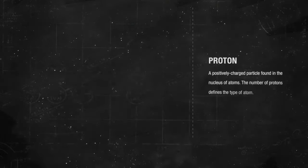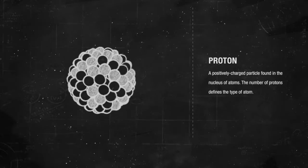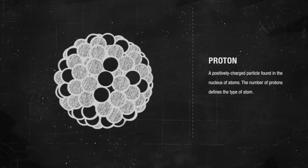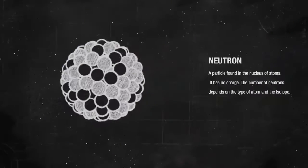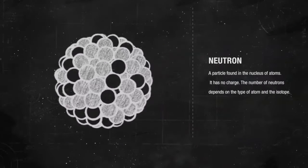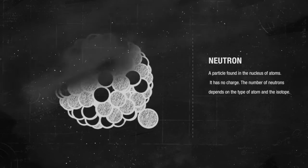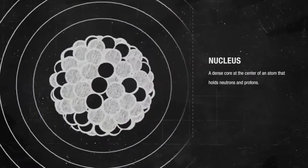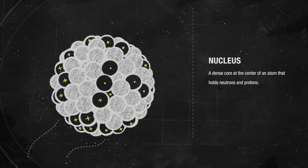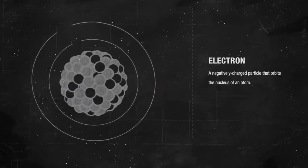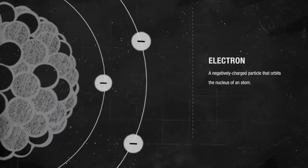You probably know the different subatomic particles of atoms: protons, neutrons, and electrons. The positively charged protons and the neutral neutrons form the nucleus of the atom, and the negatively charged electrons exist outside of the nucleus.